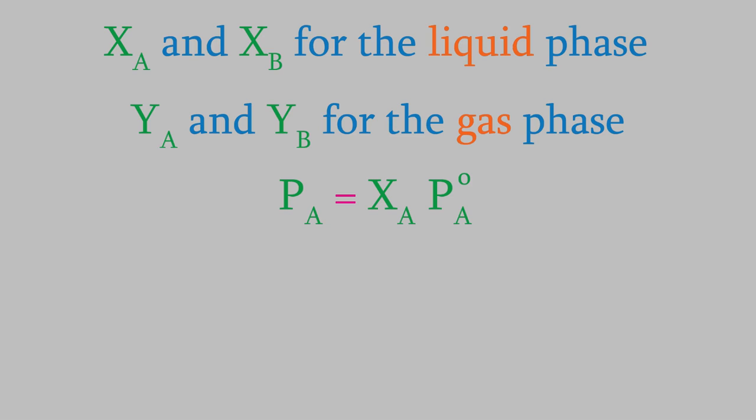Also from Dalton's law of partial pressures, we know that the mole fraction of compound A in the vapor phase is given by the vapor pressure of A divided by the total gas pressure. Since there are only two compounds in a binary solution, the total gas pressure will just be the sum of the vapor pressure for each compound, so P is just Pa plus Pb. With a bit of algebra, we can combine all these equations to get some results that will give us insight into some common chemical procedures like distillation.